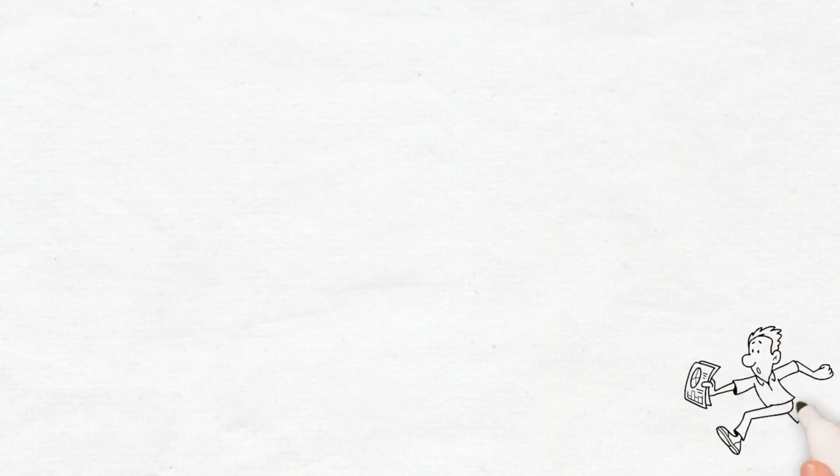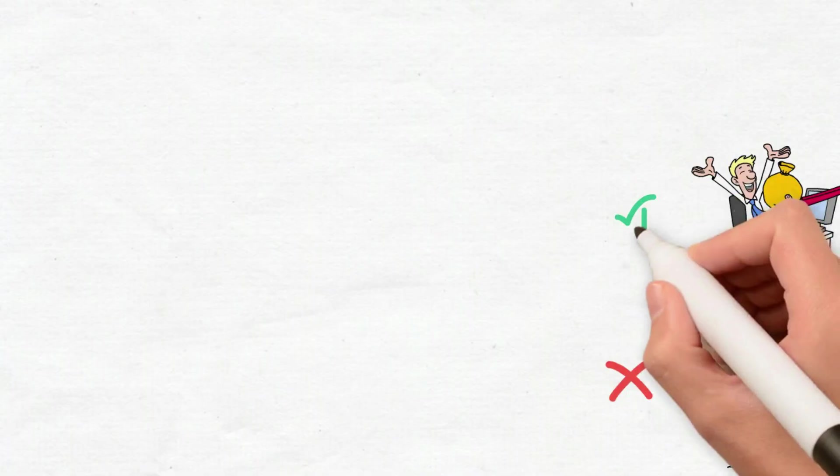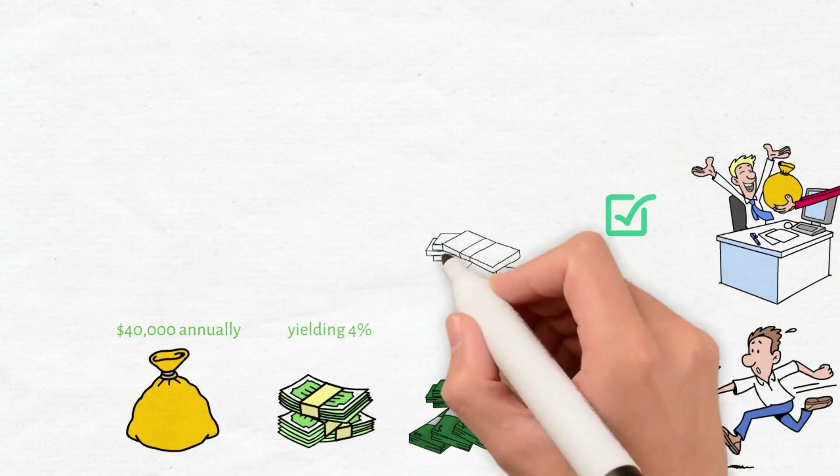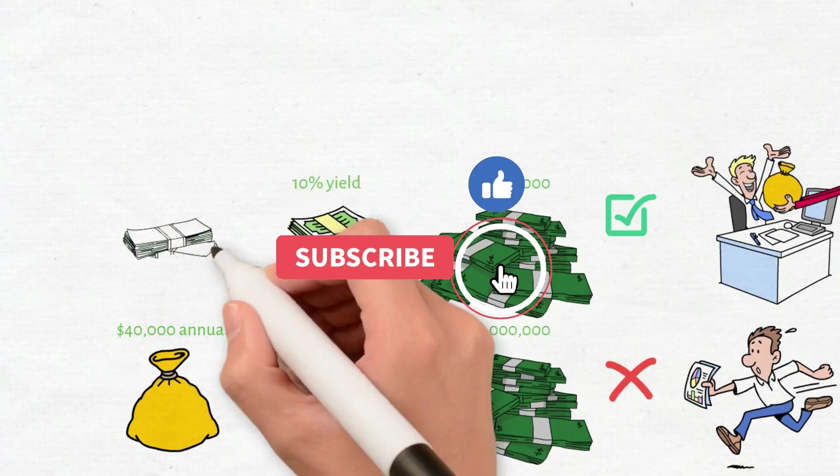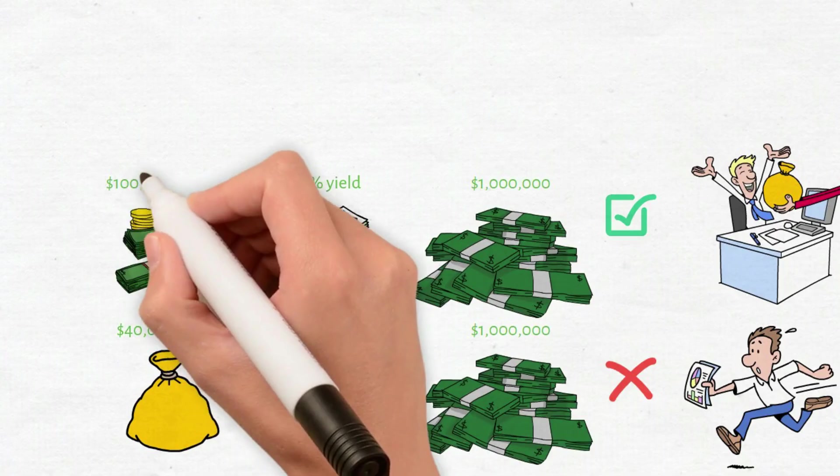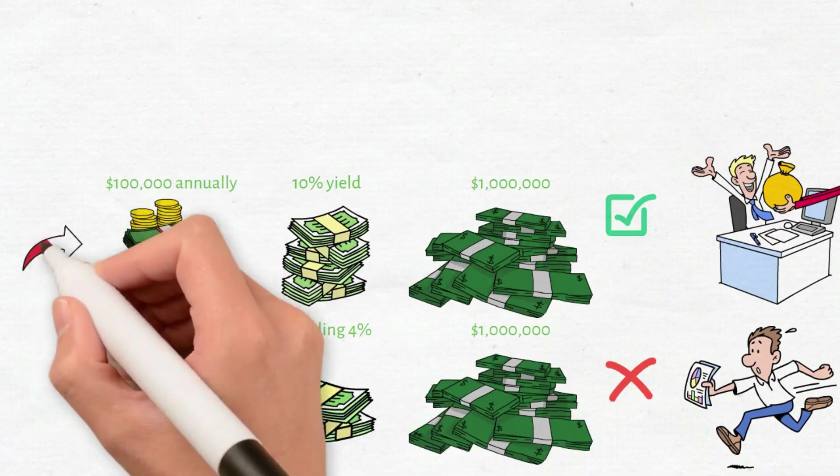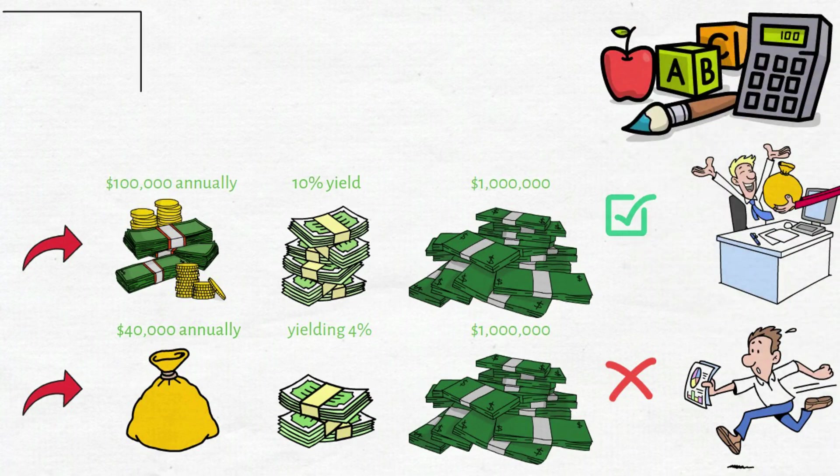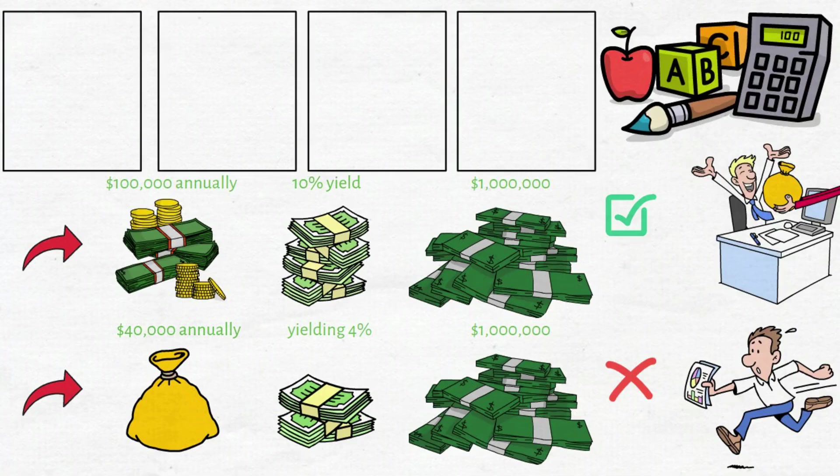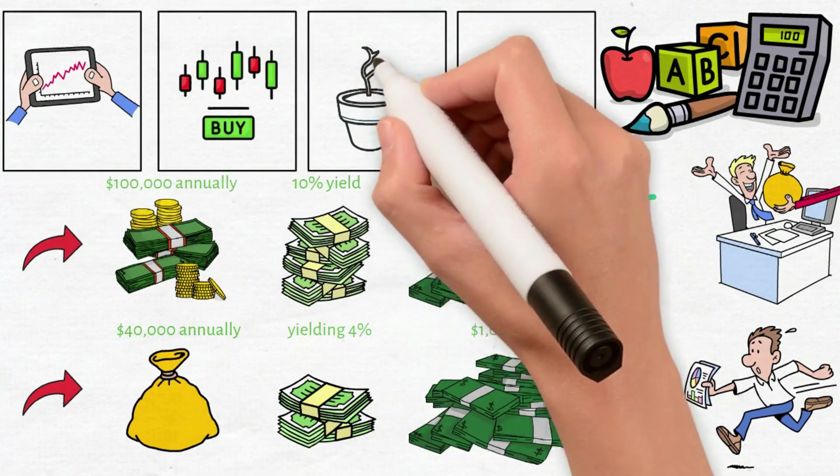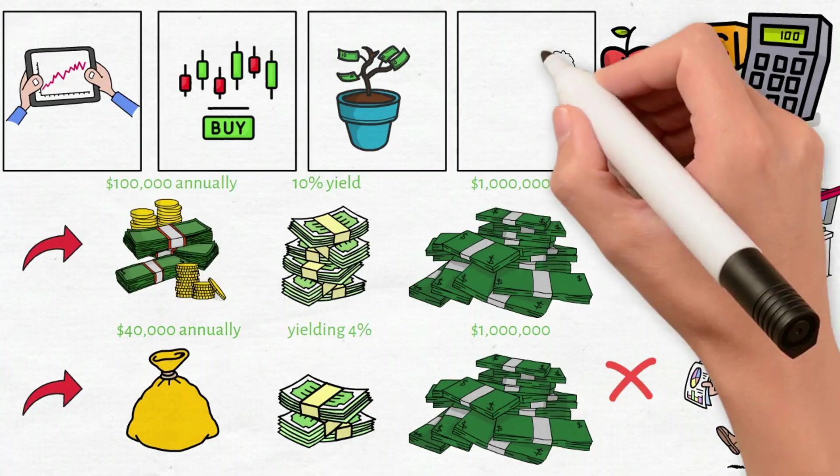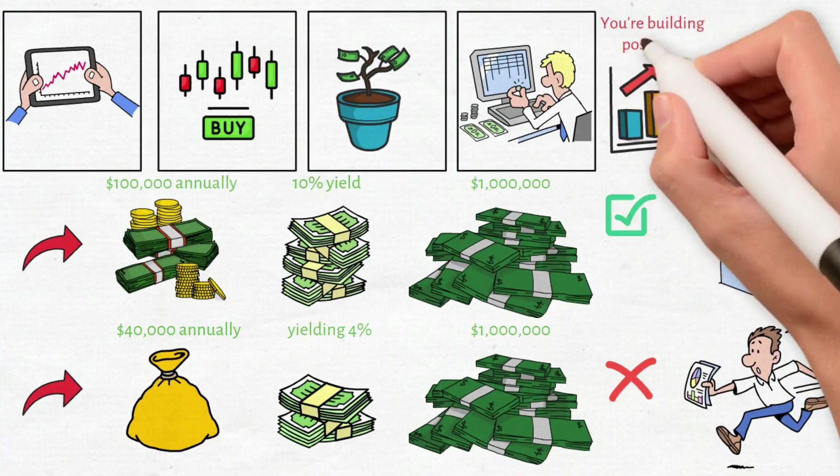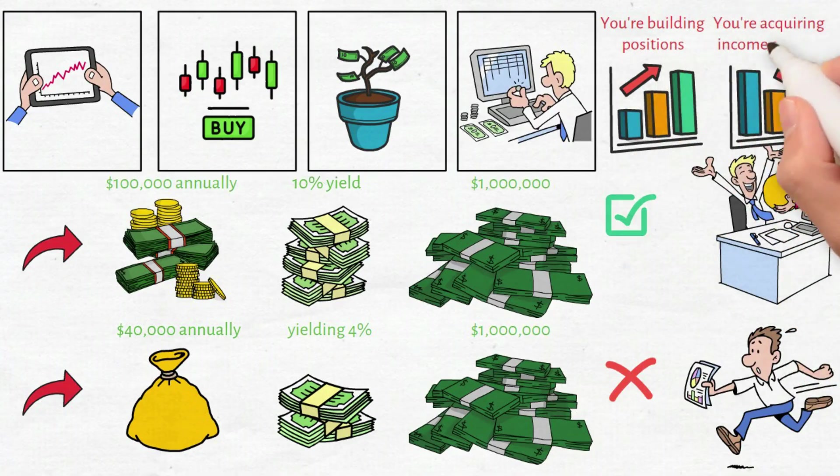The ultra-wealthy don't chase returns. They engineer income streams. A million-dollar portfolio yielding 4% generates $40,000 annually. But a portfolio with 10% yield on cost from two decades of payout growth generates $100,000 annually. Identical million dollars, more than double the income. That's the mathematics of income growth compounding. Your execution plan begins immediately. Open a brokerage account, purchase shares, enable automatic payout reinvestment. Add capital consistently, regardless of market direction. Rising markets? You're building positions. Falling markets? You're acquiring income on sale.